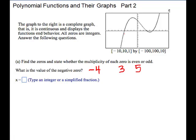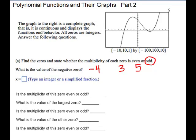For each of these, it crosses. So it's crossing, it's crossing, it's crossing. So the multiplicity is odd. Let's look at the other questions.